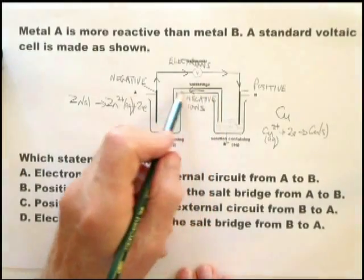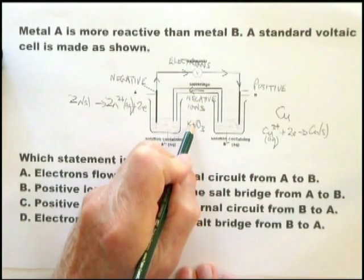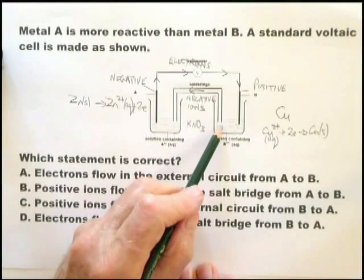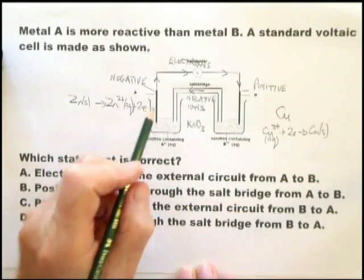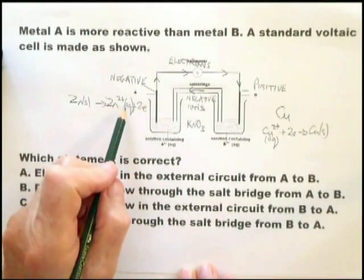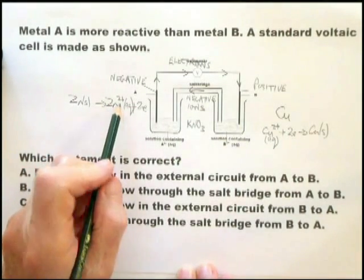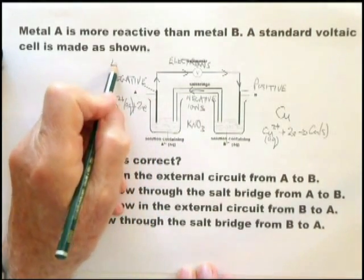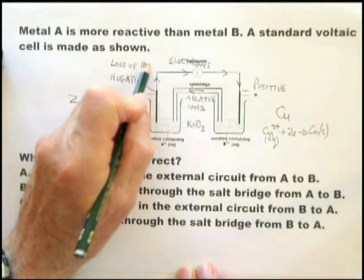In general, salt bridges are usually potassium nitrate, KNO₃ — it doesn't have to be — simply so long as it's a salt that does not chemically react with either solution. The next thing is that as the zinc is being converted to zinc ions, the metal here is losing mass — there is loss of mass of this electrode.